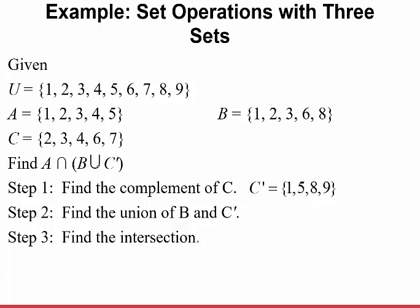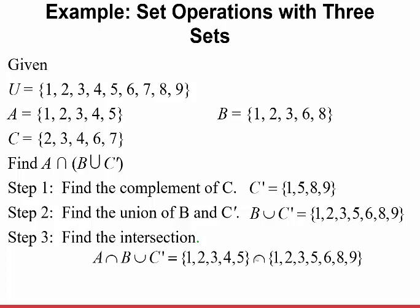Now find the union of B and C complement. Taking B and C complement and combining them — not double counting — gives {1, 2, 3, 5, 6, 8, 9}. Then the final step: find the intersection with set A, which is {1, 2, 3, 4, 5}. The elements in common between A and {1, 2, 3, 5, 6, 8, 9} are {1, 2, 3, 5}.